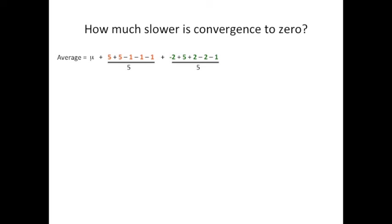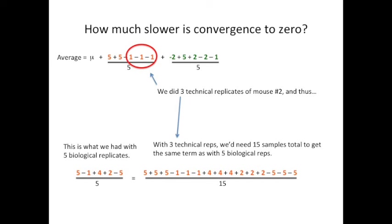Since we did three technical replicates for mouse number two, with three technical replicates, we'd need 15 samples to get the same term as we did with five biological replicates. As you can see on the left side, this is what we had when we had five biological replicates. It's equivalent to this long fraction on the right side. So now let's compare all three different types of experiments.